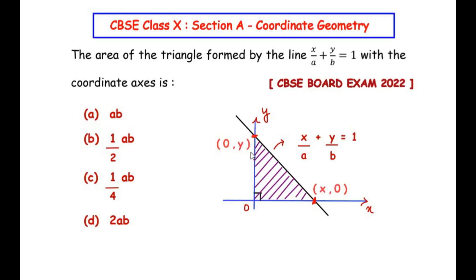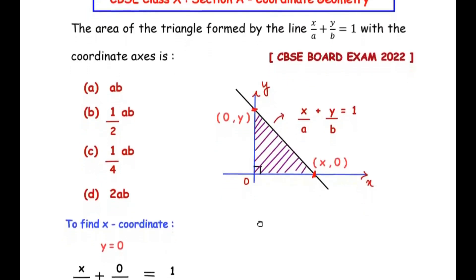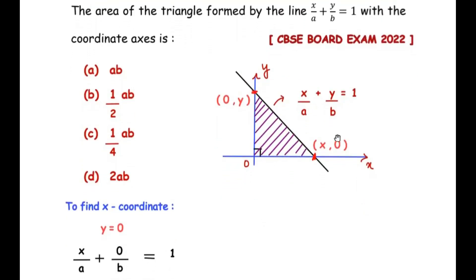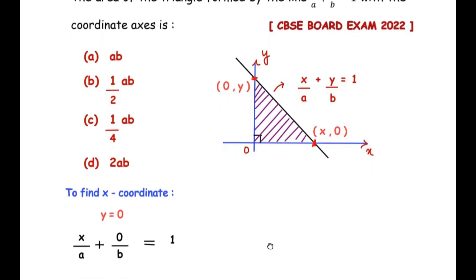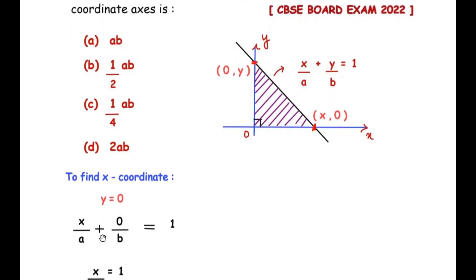So let us begin by first finding the x-coordinate of this line. Here, we have to find the x-coordinate. The procedure is: we need to make the value of y as 0. So in this given equation of the line, that is x over a plus y over b, we are going to substitute in place of y, 0.